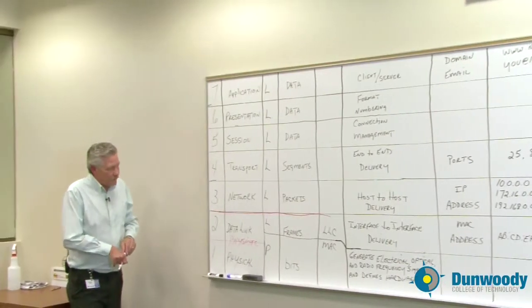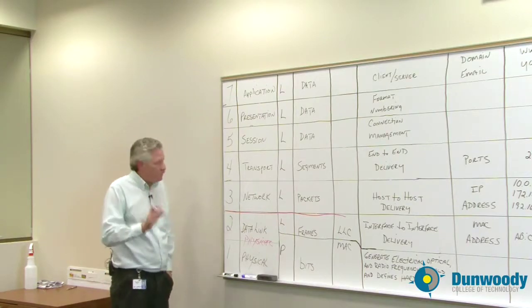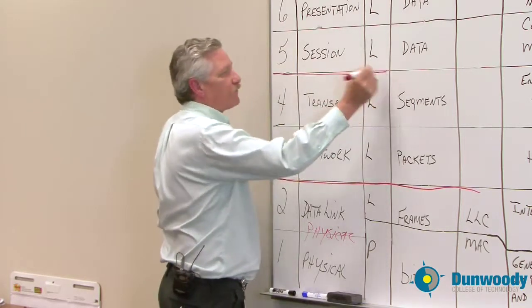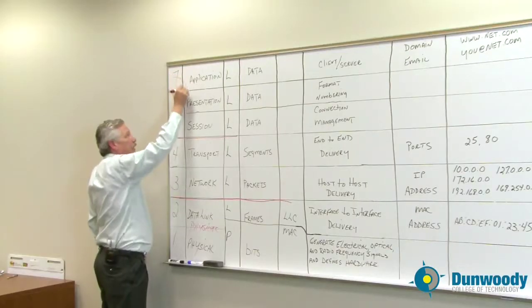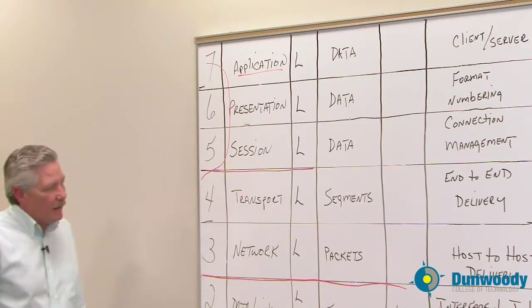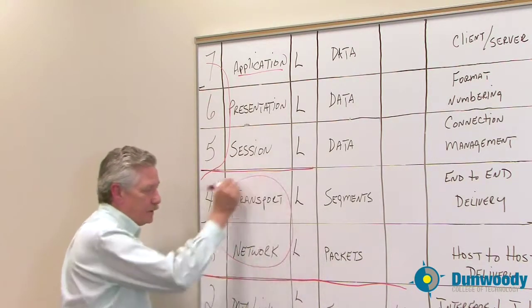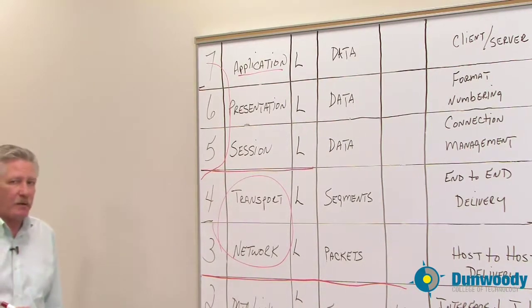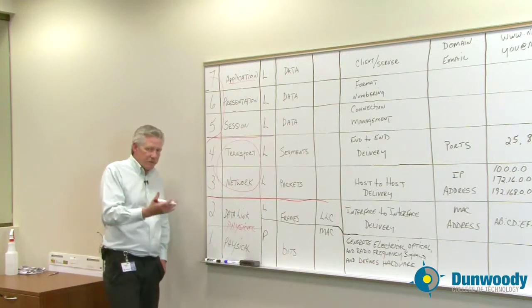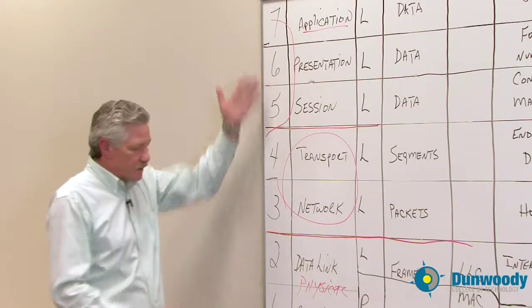Now in the models, in the four layer model that Cisco uses, the network and the transport layer are left the same. It's the upper three that are all combined into one and it's called the application layer. In the three layer, these two are combined. But we don't use the three layer very much anymore. The primary models we talk about, especially here at Dunwoody since we use Cisco equipment, is the Cisco or the four layer, and then of course the OSI model.